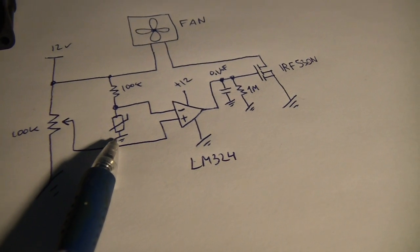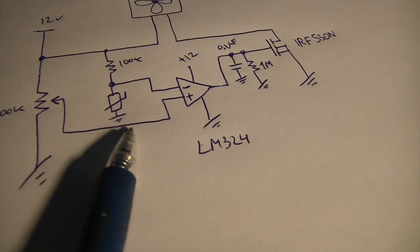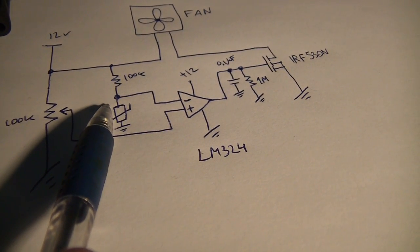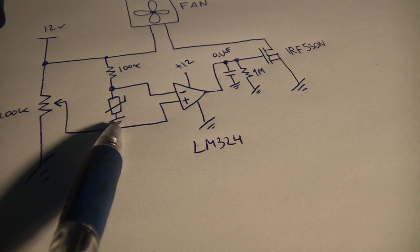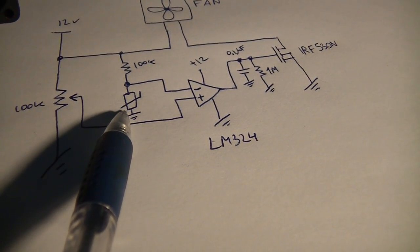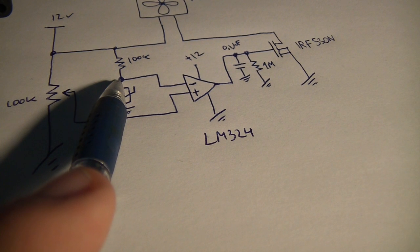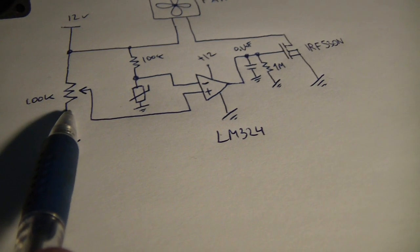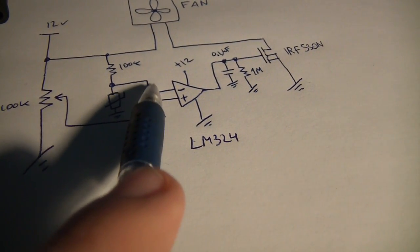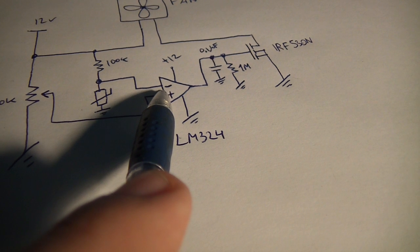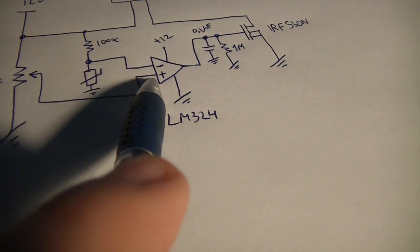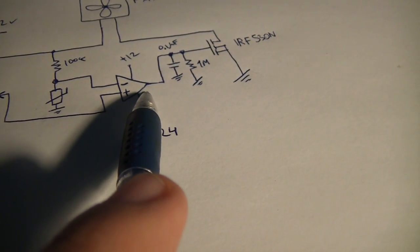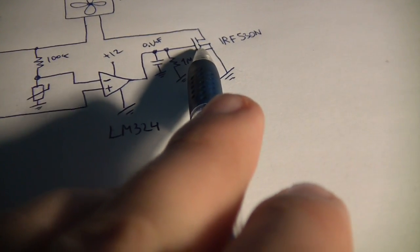The thermistor will be attached to the heatsink of the amplifier. The basic principle is that when the thermistor gets hotter, its resistance will drop and it will decrease voltage at this point because it's a voltage divider. At a certain point, this voltage from this voltage divider will get lower than this voltage which comes from the pot.